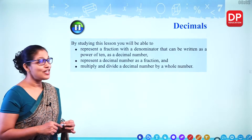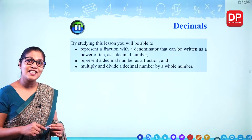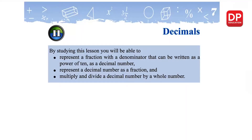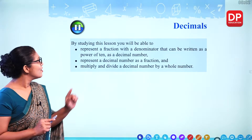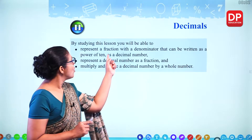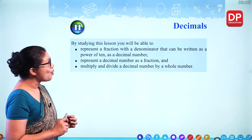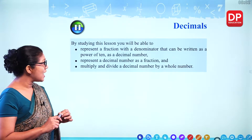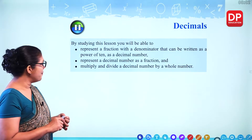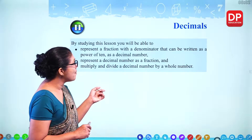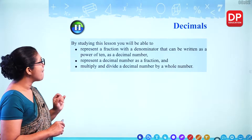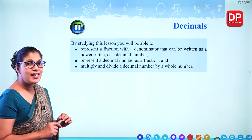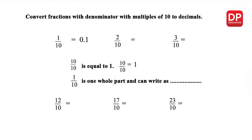Hello children, today I'm here to teach you chapter 11 in your textbook — that's decimals. You have already known about decimals. So in this lesson, we are trying to represent fractions with a denominator that can be written as a power of 10 as a decimal number, and then represent a decimal number as a fraction. We will also multiply and divide a decimal number by a whole number, and convert fractions with denominator multiples of 10 to decimals.